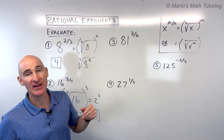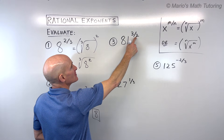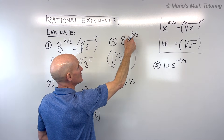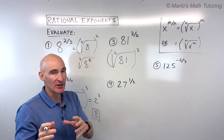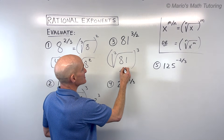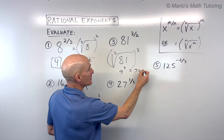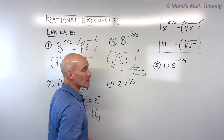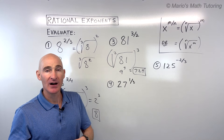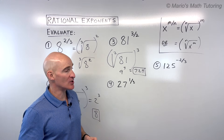Just remember it's the denominator that is the root. For number 3, this is saying what's the square root of 81 raised to the third power. What number times itself twice equals 81? That's 9. Then 9 to the third power is 9 times 9 times 9, which equals 729. As you work with exponents more you'll start to memorize some of these larger powers.